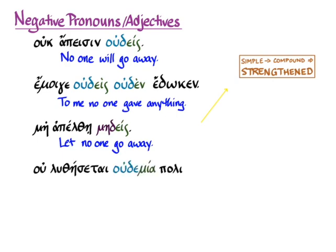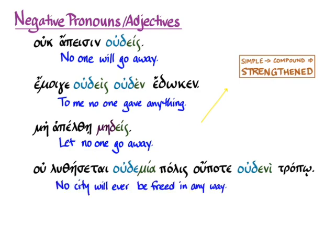Ouluthesitai, oudemia polis, upota oudeni tropo. There we have a lot of negatives. The first one is a simple negative, and so we have 'no city — oudemia polis — will ever be freed — upota luthesitai — in any way — oudeni tropo.' All those negatives keep emphasizing the negation because it starts with a simple negative, and with all those compound negatives afterwards you get a very, very negative statement rather than anything else.